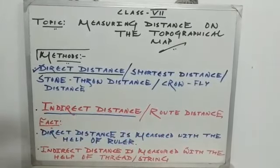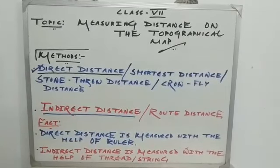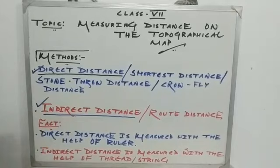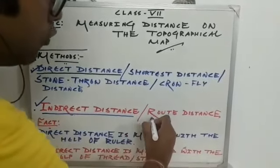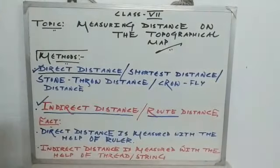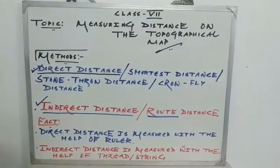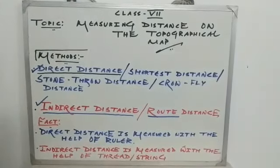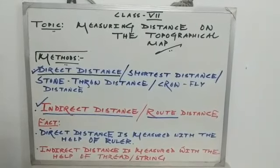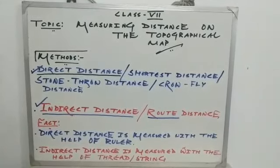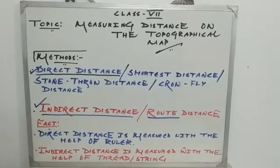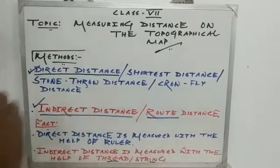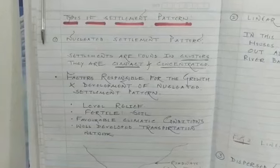The direct distance method is measured with the help of a ruler. With the ruler, in centimeter units, we measure the direct distance. Now the indirect distance, which is also called the route distance, is measured along roadways, along a channel, or along the bank of a river. This indirect distance is measured with the help of thread or string.